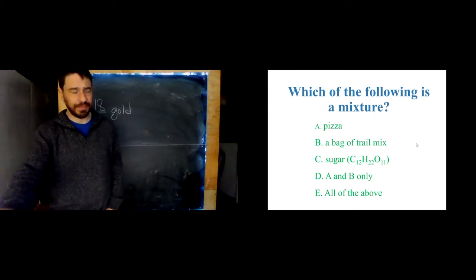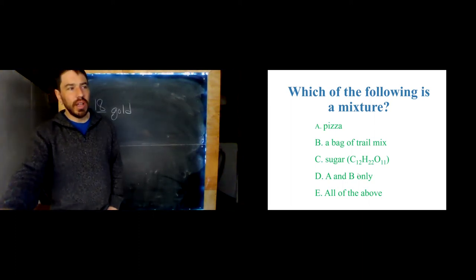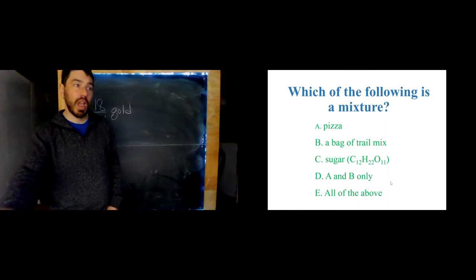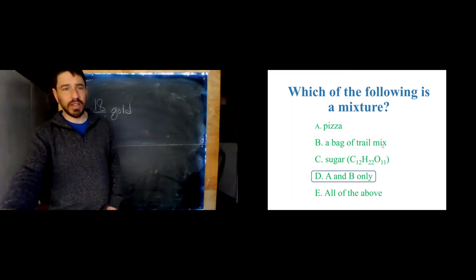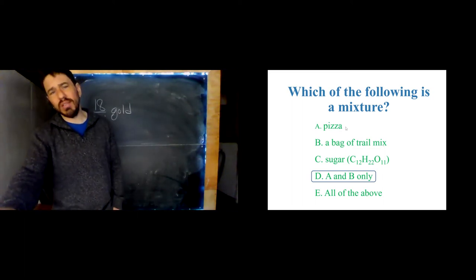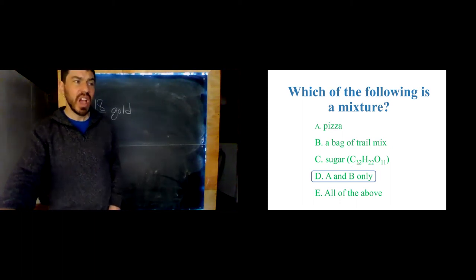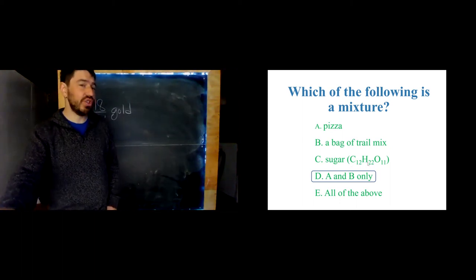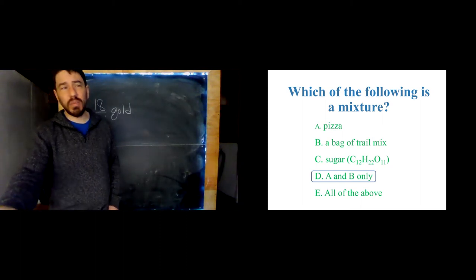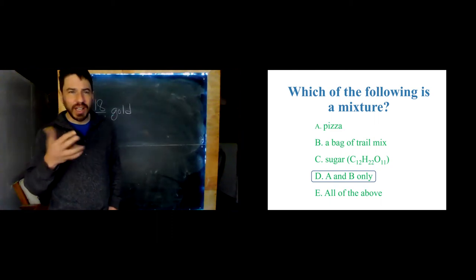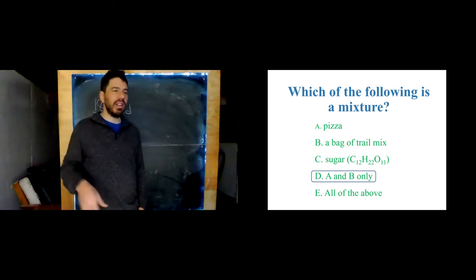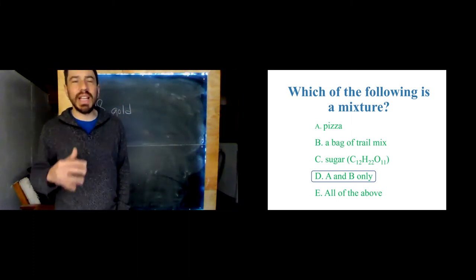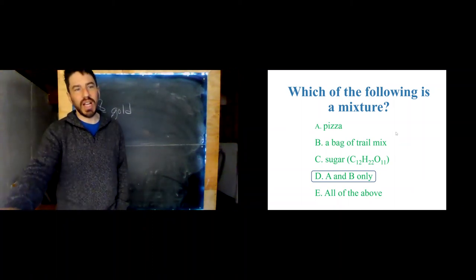Which of these is a mixture: a pizza, a bag of trail mix, sugar, just A and B, or all of the above? The answer is A and B. Trail mix is clearly a mixture, and pizza is a mixture of dough, sauce, cheese, and other delicious things. Sugar, however, is not a mixture — sugar is a molecule, a single pure substance. Sugar isn't a combination of carbon, hydrogen, and oxygen mixed together; it is a molecular compound and a completely new substance.